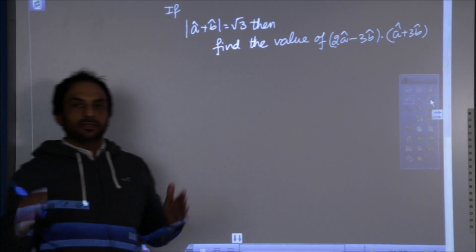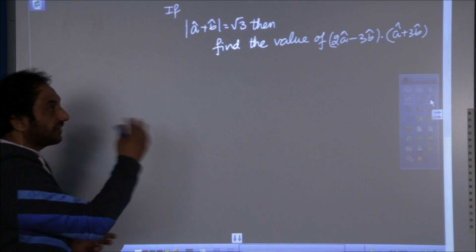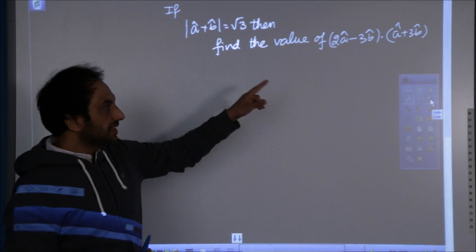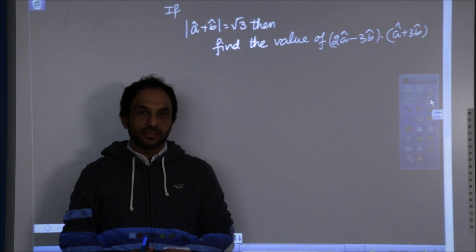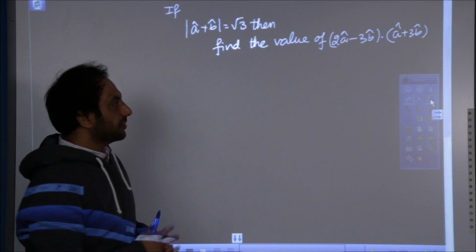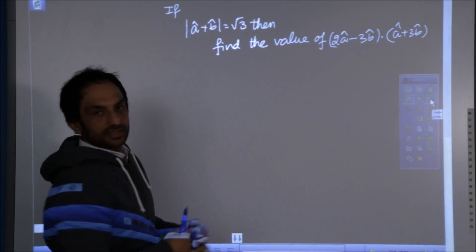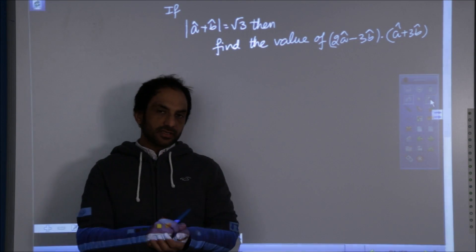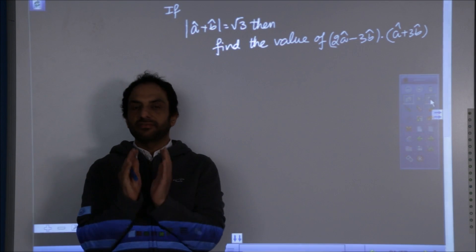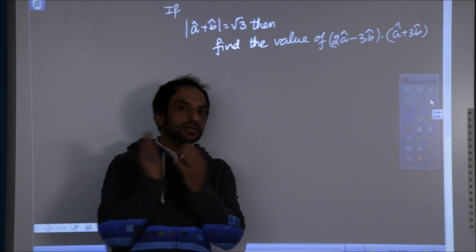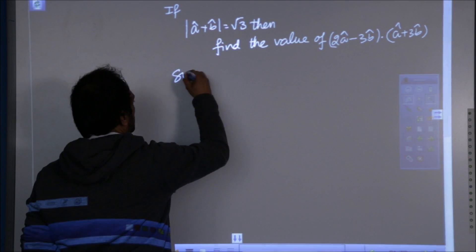If the magnitude of the sum of the two unit vectors is root 3, then find the value of the expression on the basis of the given condition. So in these type of questions, initially we had to focus on the given condition. From the given condition, we will get something related to the dot product and we will use that condition in the expression.